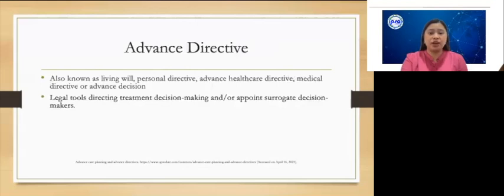Advanced directives are the documents a person completes while still in possession of decisional capacity about how treatment decisions should be made on his behalf in the event he loses the capacity to make such decisions. They are legal tools directing treatment decision-making and/or appointing surrogate decision-makers. It is important to remember that advanced directives are only acted upon when the patient has lost the ability to make decisions for himself, and that they can be revoked orally or in writing by the patient at any time, so long as they have maintained decisional capacity.